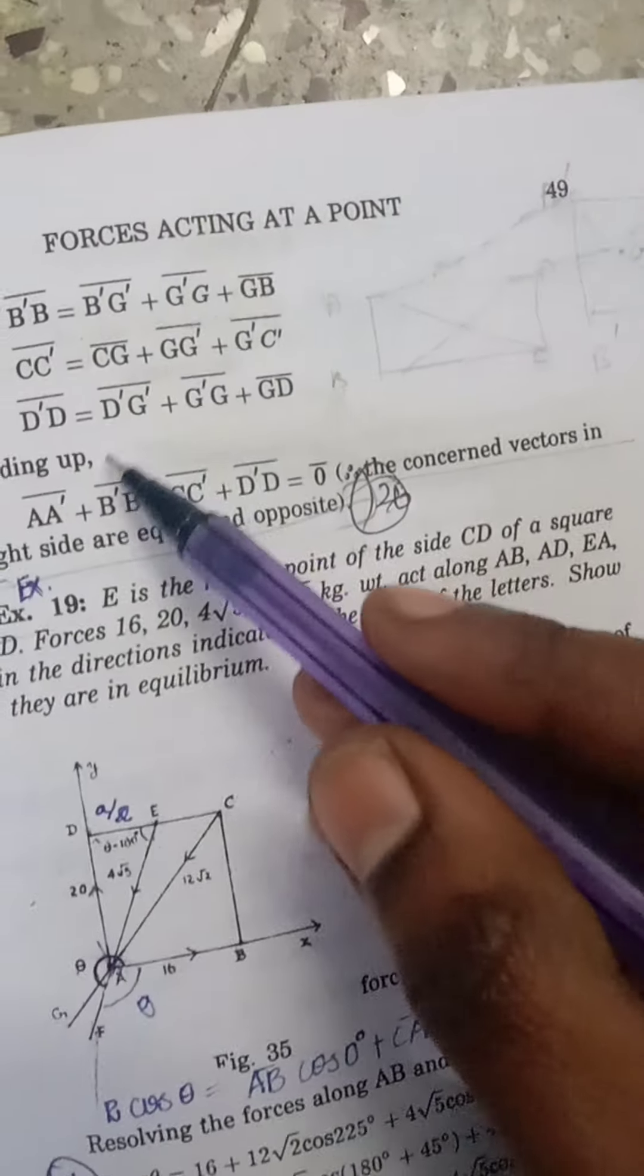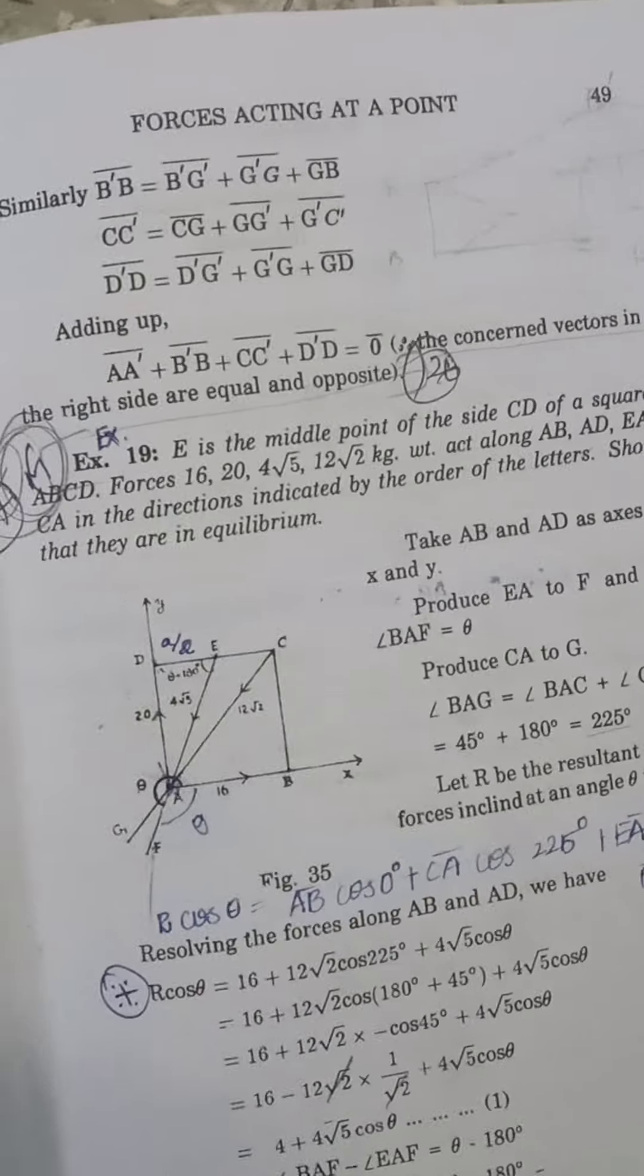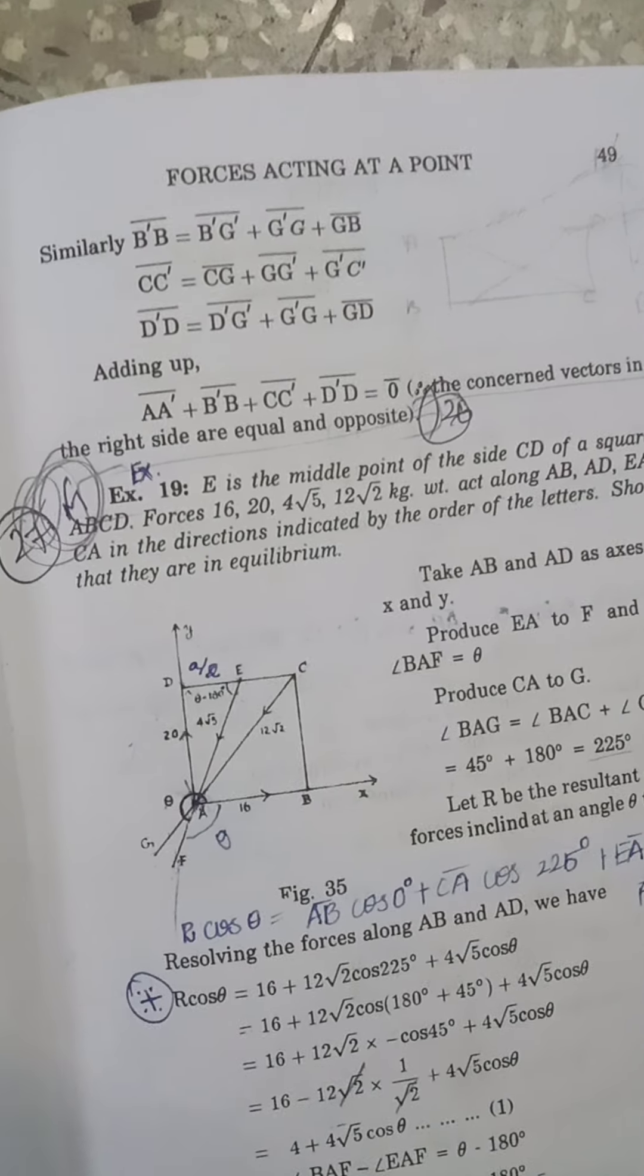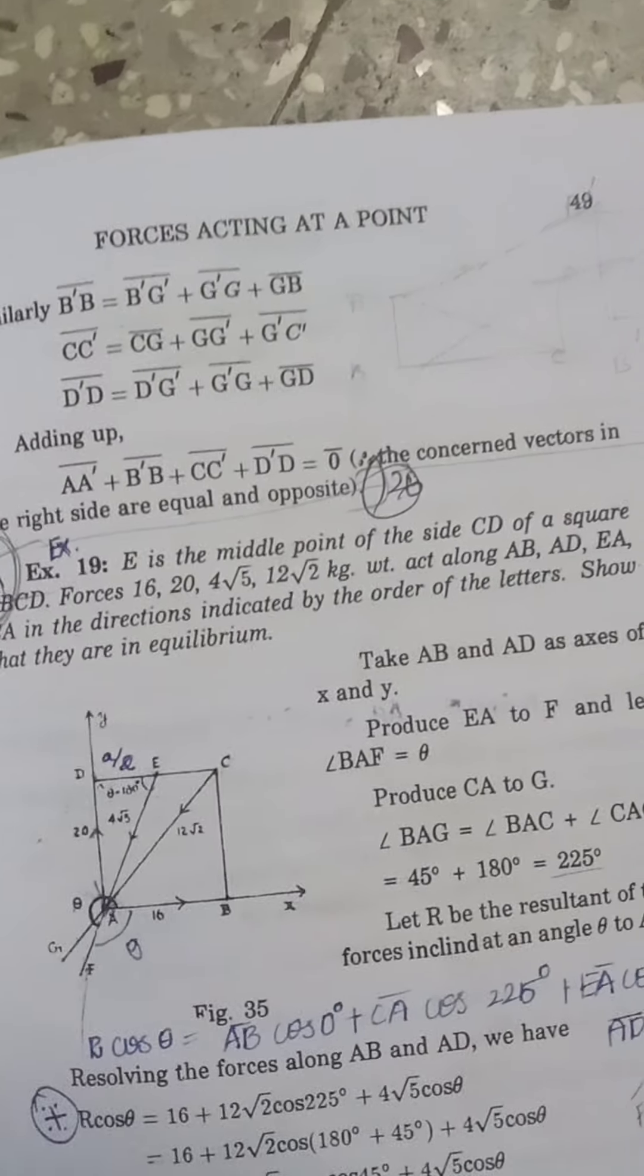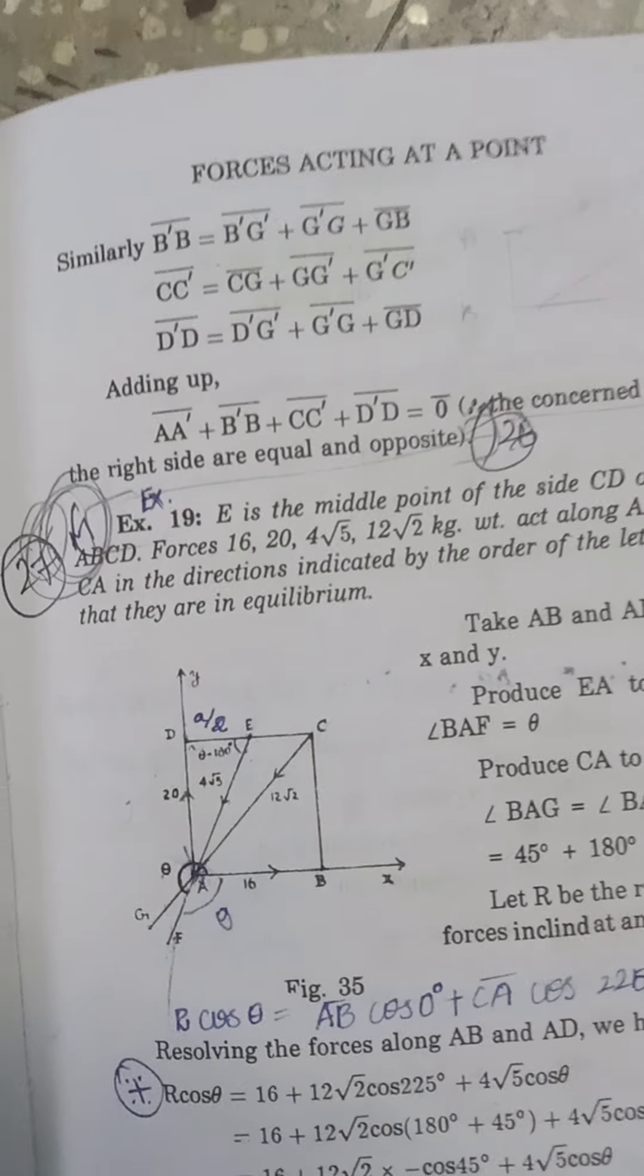Similarly, we frame all the given forces. Then what we do is we add up all the points. These are equal and also equal and opposite, so they are getting cancelled.